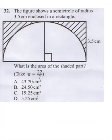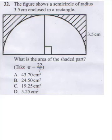The next question says the figure shows a semicircle of radius 3.5 cm enclosed in a rectangle. What is the area of the shaded path? To solve this, note that the corner is 90 degrees and we are dealing with a semicircle, so from the center to the edge is the radius.